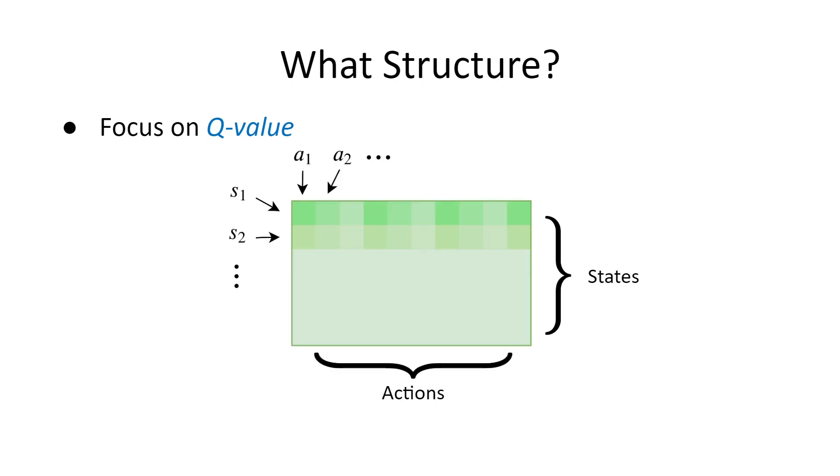We take a linear algebraic view by treating the Q-value as a big matrix. Here, the rows represent states, the columns represent actions, and the entries represent the value Q(s,a). Therefore, a structured Q-value would equivalently mean a structured Q-matrix. One of the fundamental global structures in studying matrices is the rank of the matrix. This leads us to study the low-rank structure of the Q-matrix. As we will see, many control and RL tasks indeed have a low-rank Q-matrix, which can be effectively exploited to design better methods.